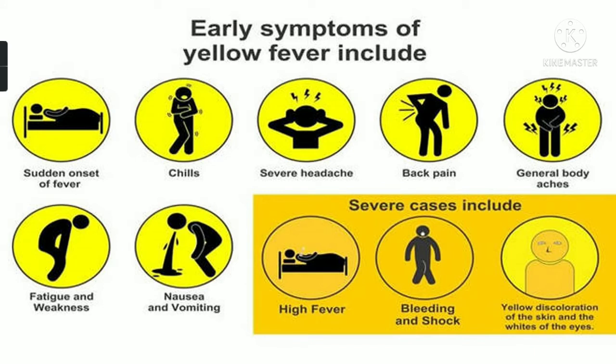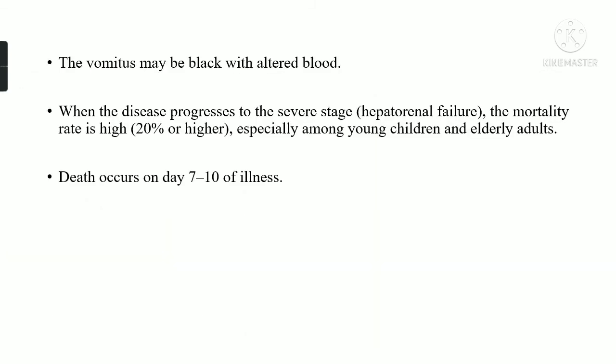The main symptoms are divided into two stages: early symptoms and severe symptoms. Early symptoms include sudden onset of fever, chills, severe headache, back pain, generalized body ache, fatigue, nausea, and vomiting. Severe cases present with high fever, bleeding, shock, and yellow discoloration of the skin and eyes. The vomit may be black with altered blood. When the disease progresses to the severe stage, the mortality rate is approximately 20%, especially among young children and elderly adults due to low immunity. Death usually occurs on day 7 to day 10 if the patient is not responding to treatment.